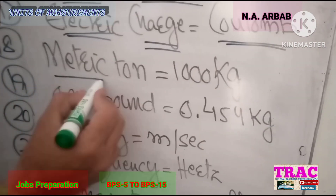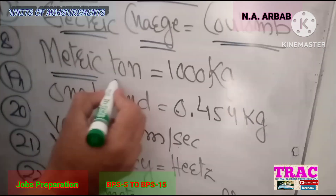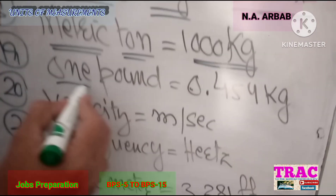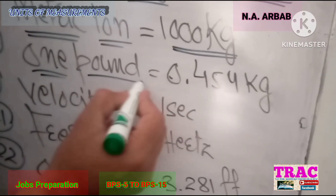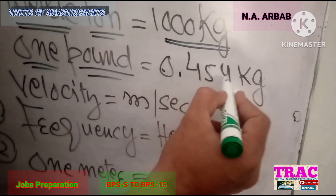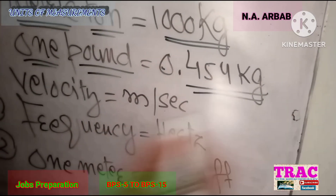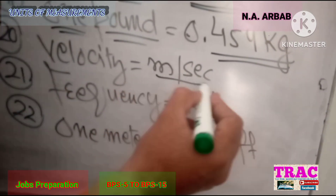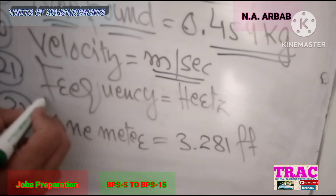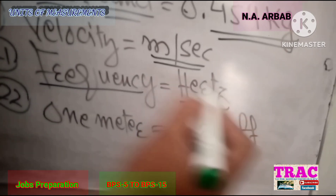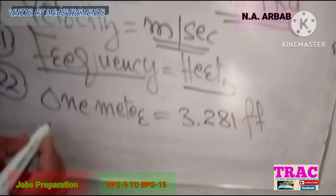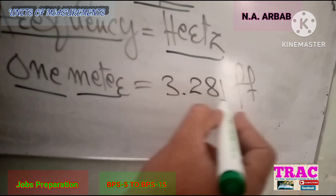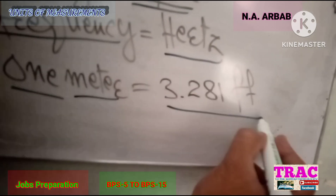Number 17: 1 metric ton is equal to 1000 kg. Number 18: 1 pound is equal to 0.45 kg. Number 19: the unit of velocity is meter per second. Number 20: the unit of frequency is Hertz. And finally, number 21: 1 meter is equal to 3.281 feet.